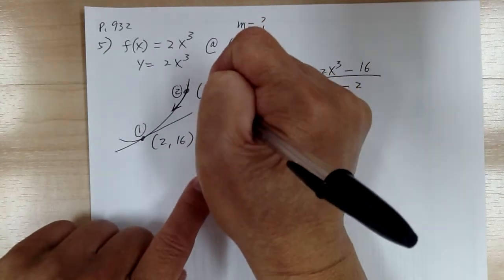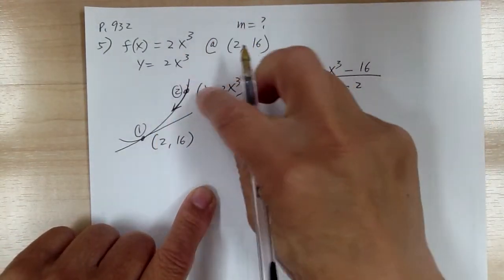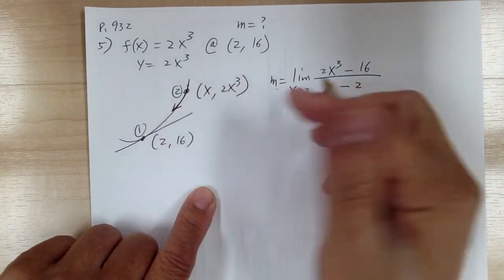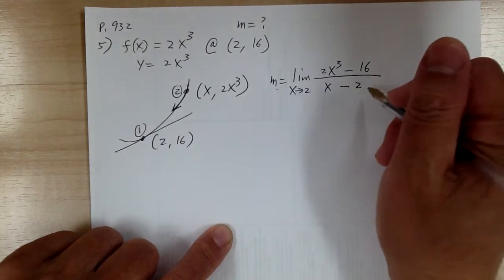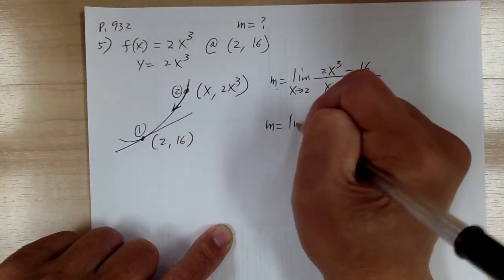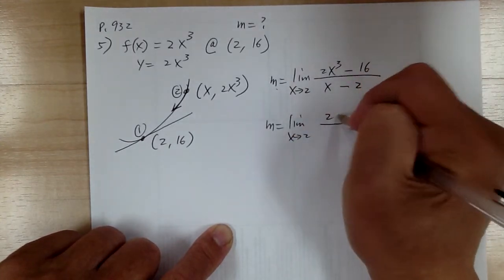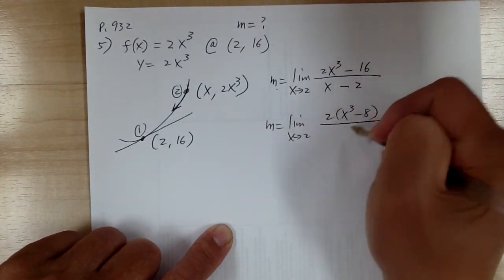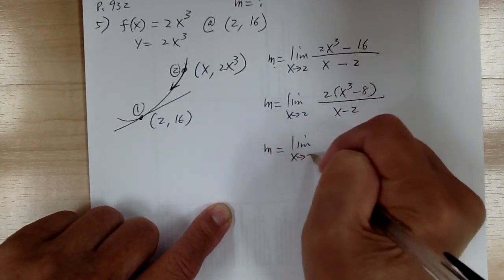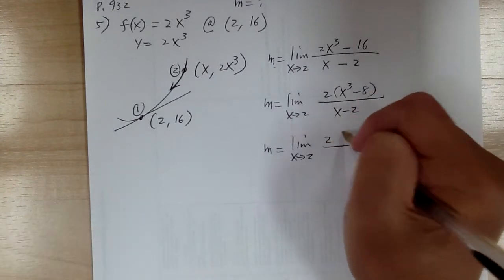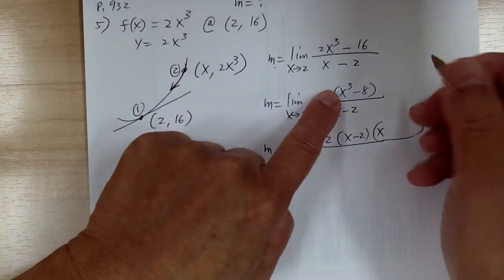So slope equals the limit of y2 minus y1 over x2 minus x1, and the limit would be x approaches to 2. Go ahead and factor out the 2. Then go ahead and do the factoring — so you get x minus 2. You need to know how to factor the cube.